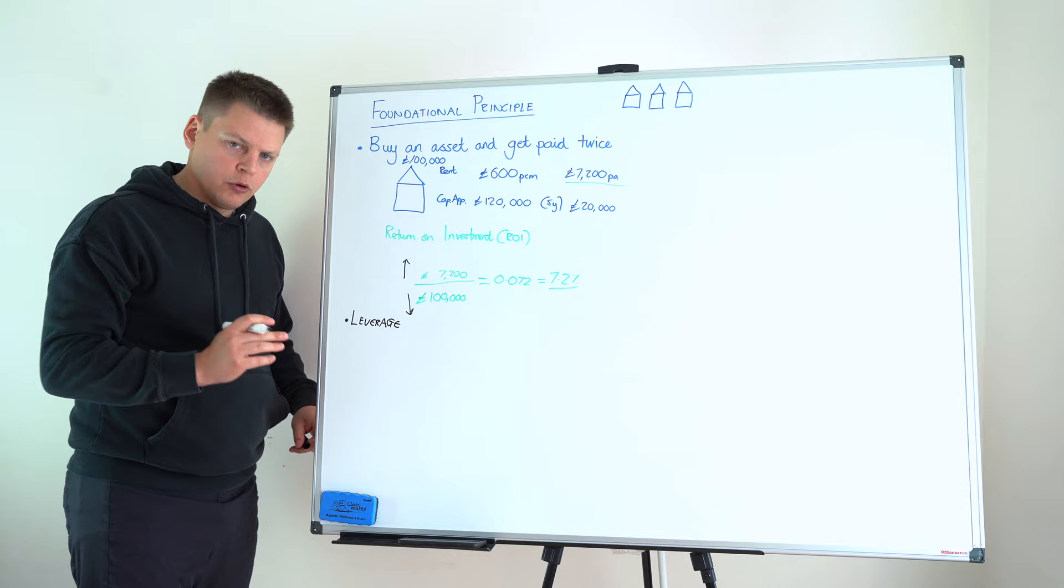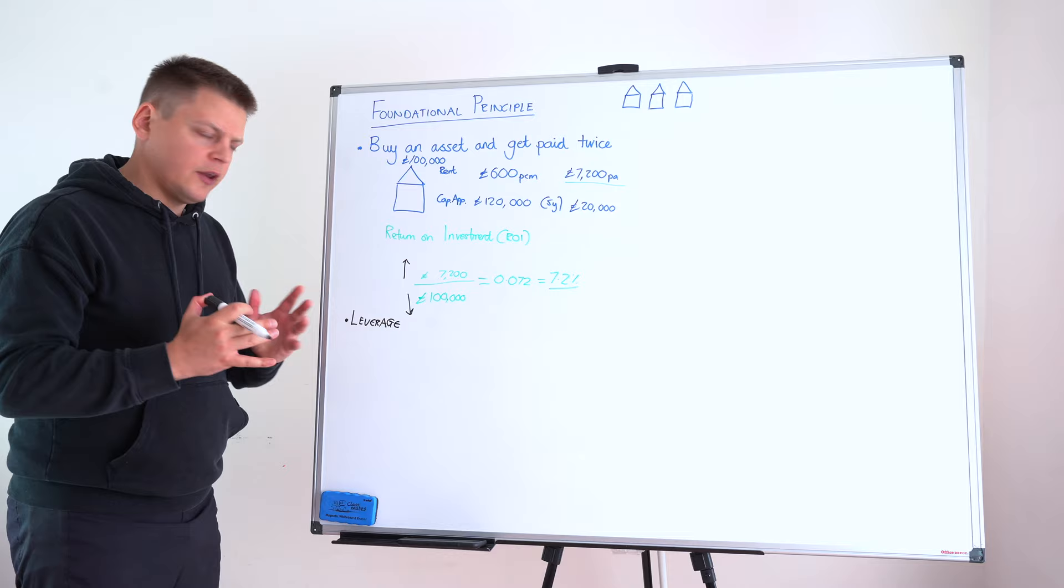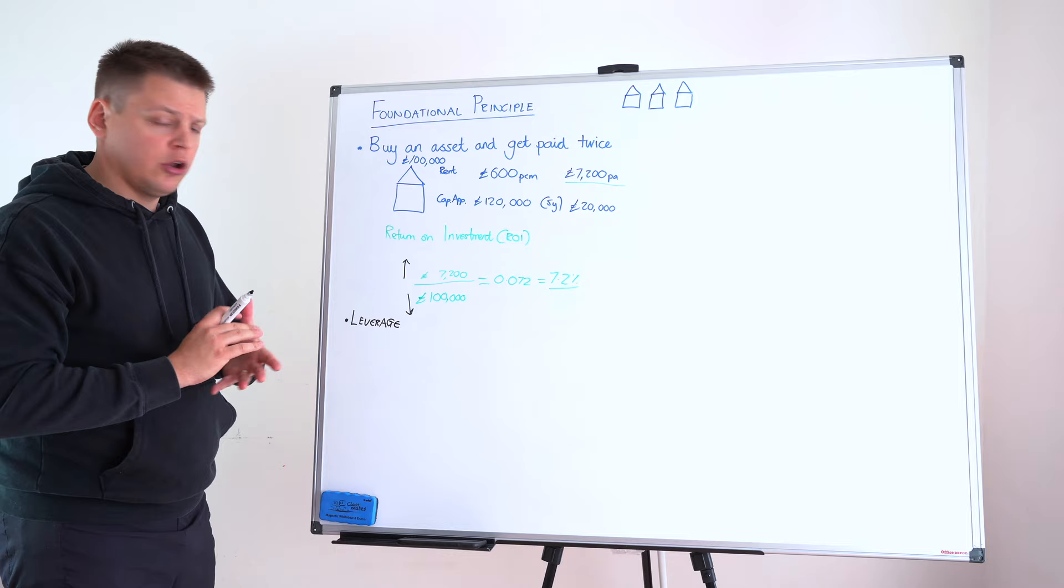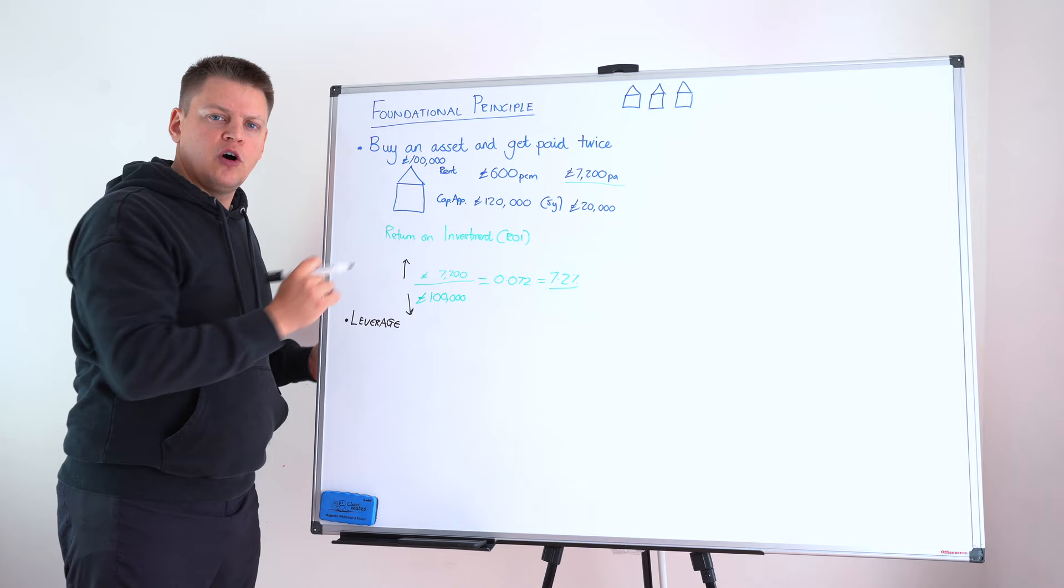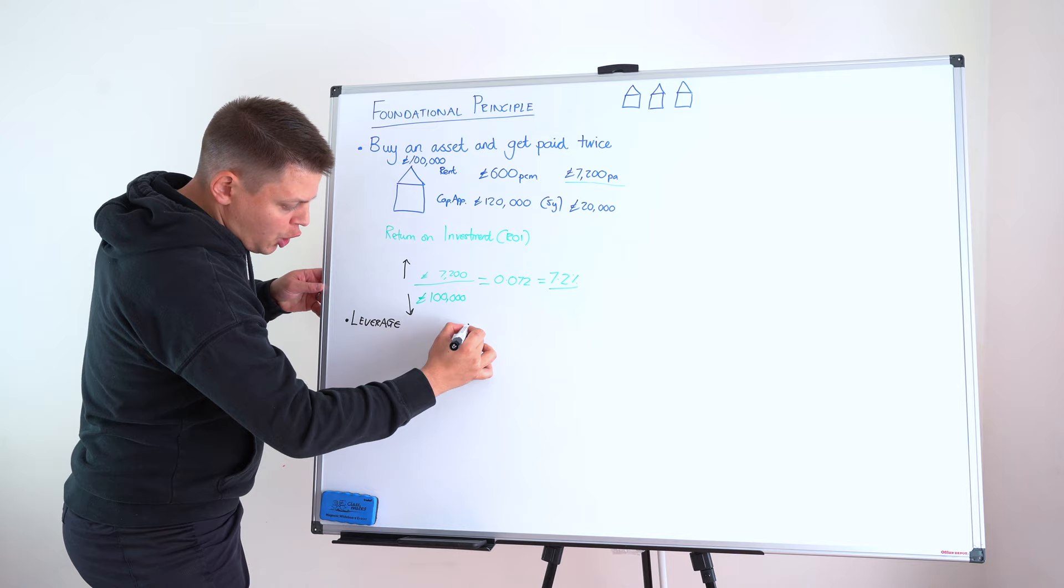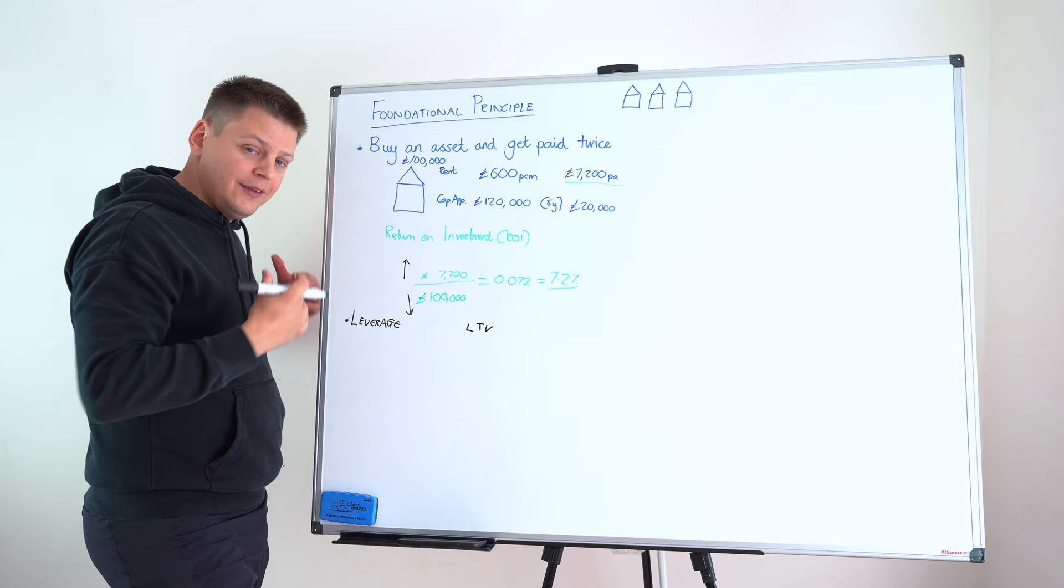We ask a bank for a mortgage. So, you go to a bank and say, hi bank, I have found a house, it's £100,000, can you help us buy it? Yes, not a problem. One of the first things they're going to ask you is, how much would you like to borrow as a percentage of the value? And this is called your loan to value. And in our example, and in our real-world investing, we work with 75%.